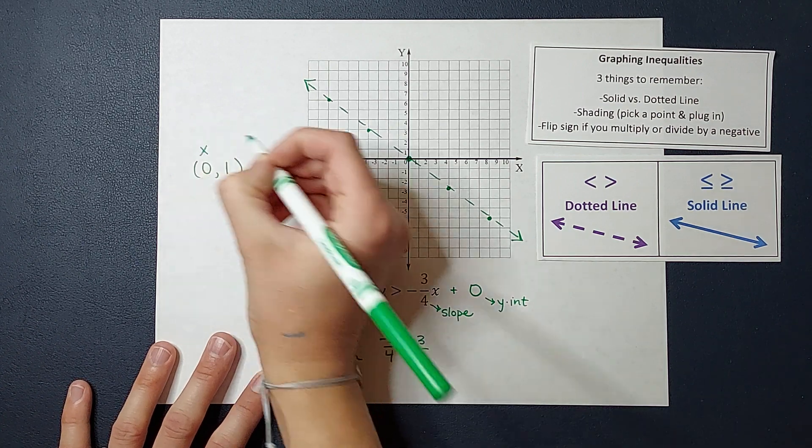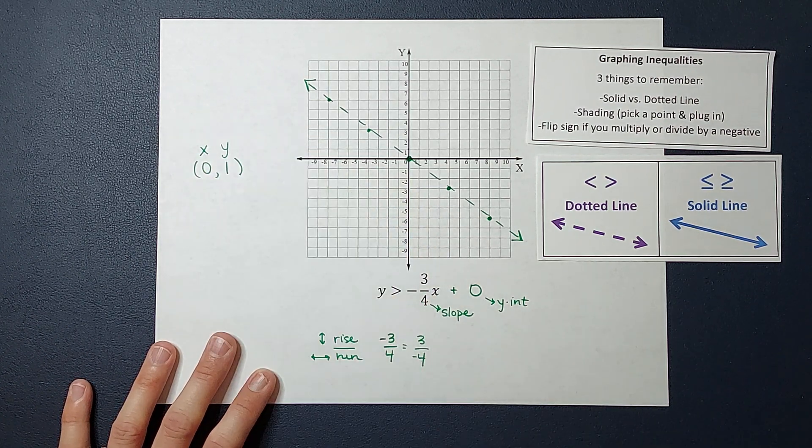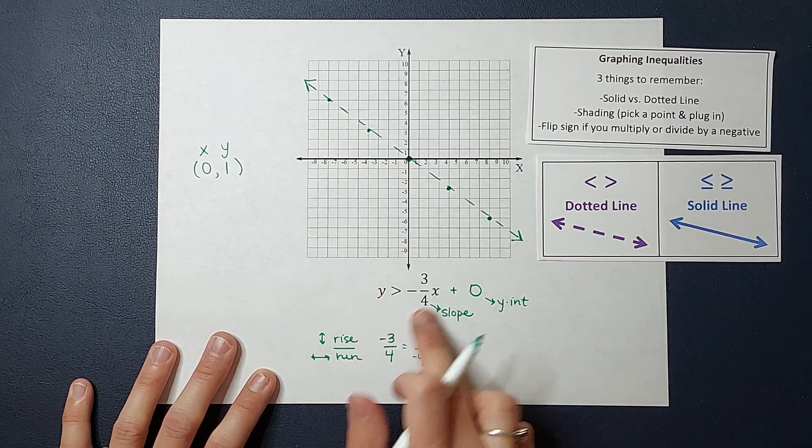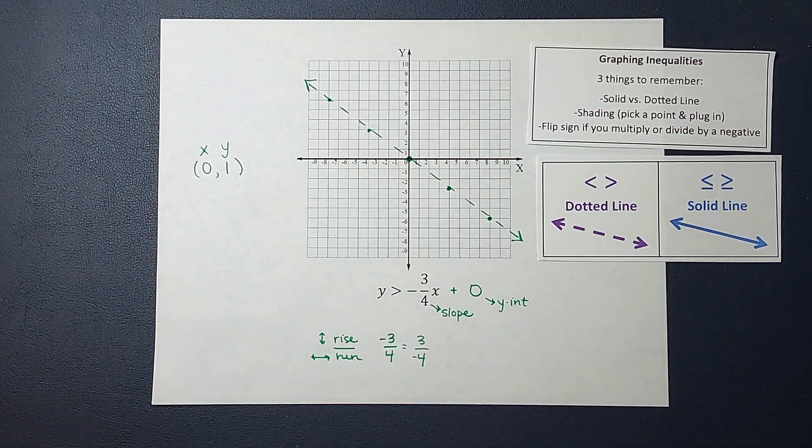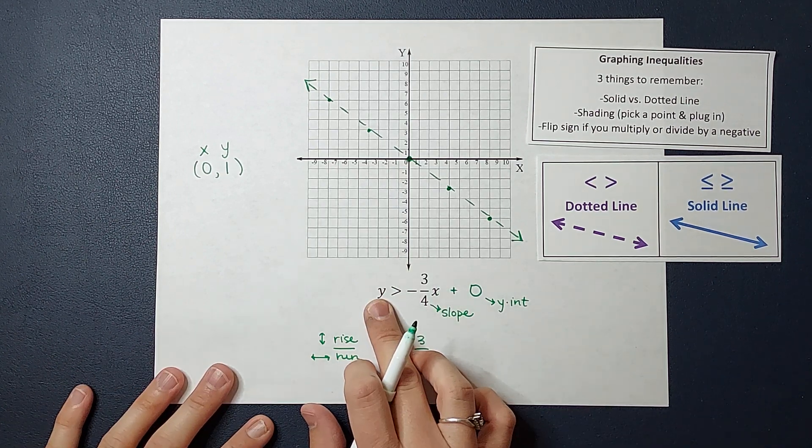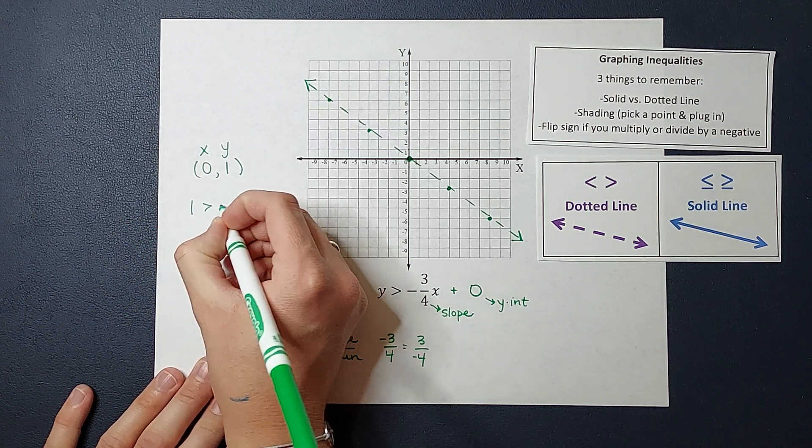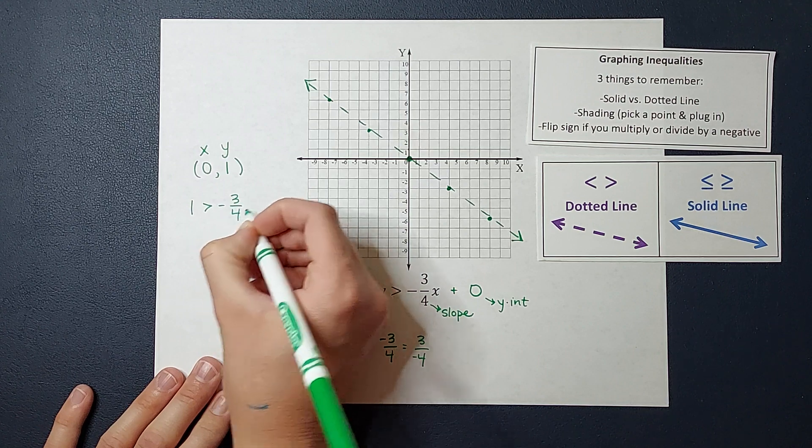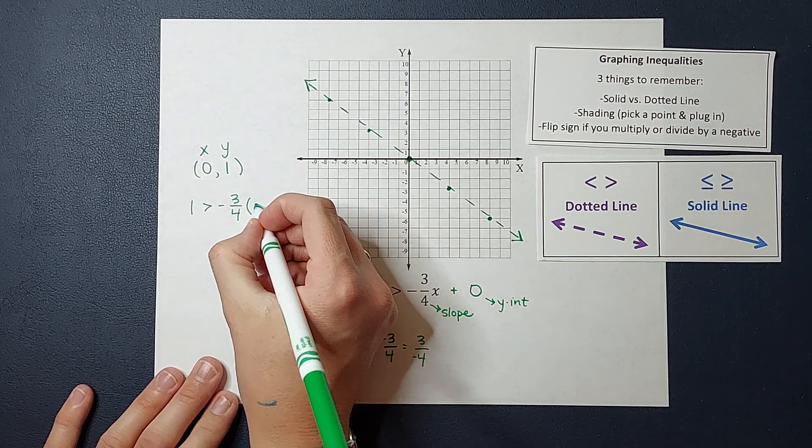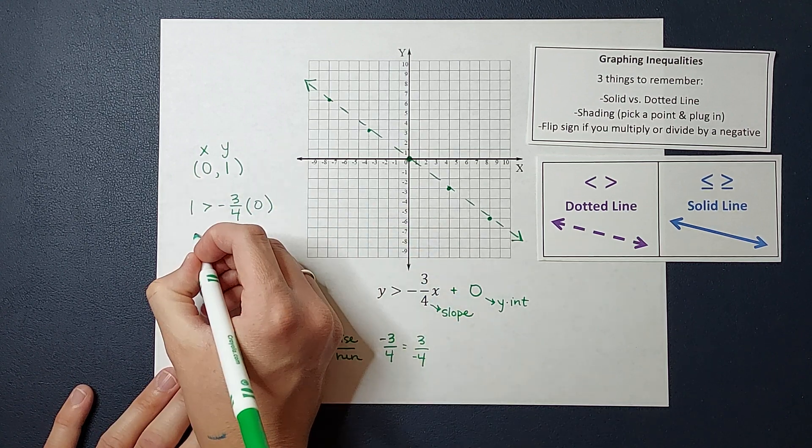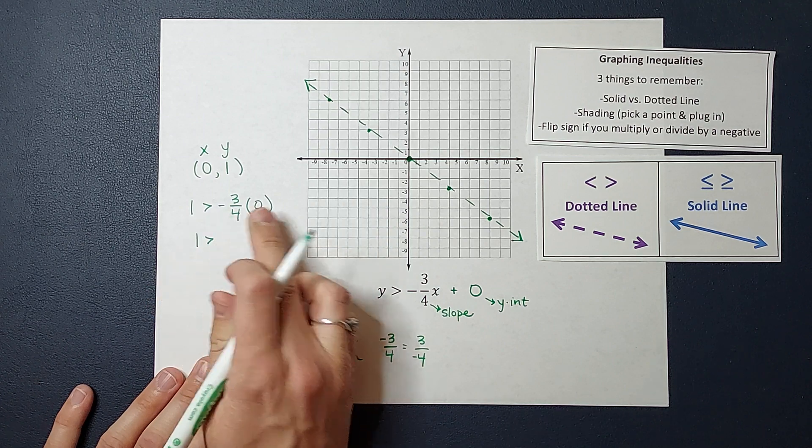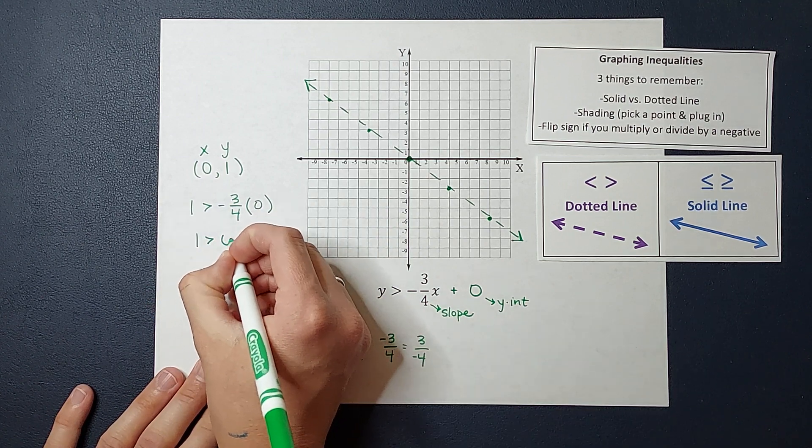So when I have 0, 1, the first number is my x, second number is my y, and I'm going to plug it into this equation, see if it comes out true. So I've got y, which is 1, is greater than negative 3 fourths times x, which is 0. So I've got 1 is greater than negative 3 fourths times 0 is just 0.